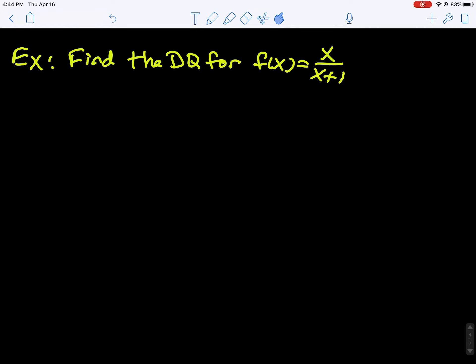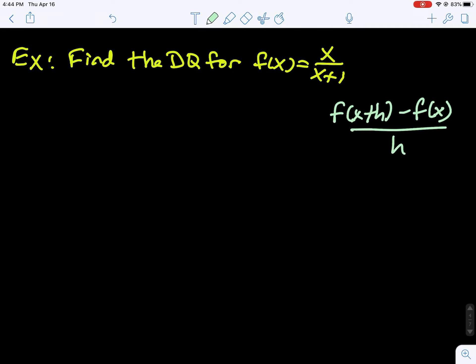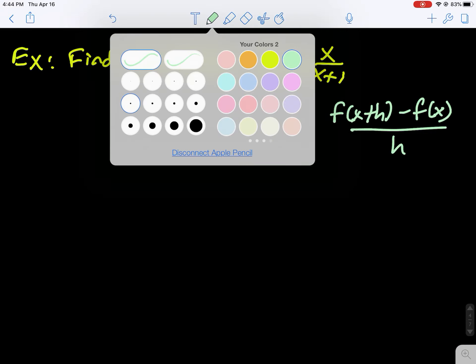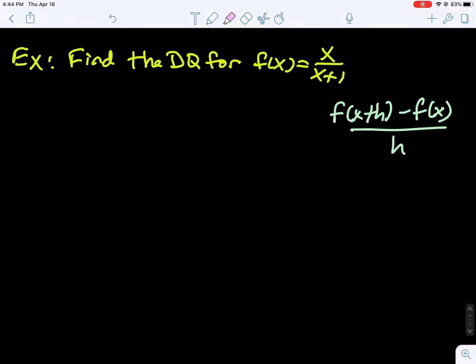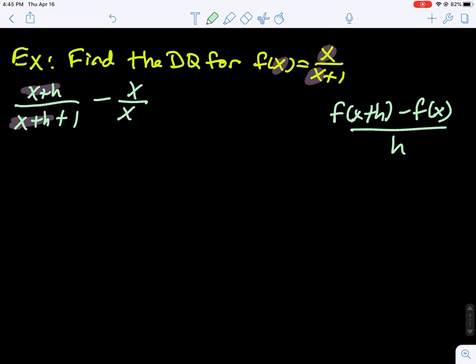Now let's look at an algebraic fraction, since students tend to struggle with fractions. We're finding f of x plus h minus f of x all divided by h. Our input goes into the function — so in the first piece, x plus h goes in, giving us x plus h over x plus h plus 1. Then we minus the original function x over x plus 1, all over h.